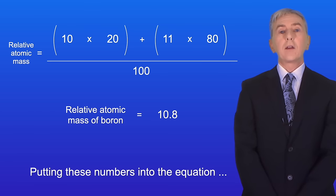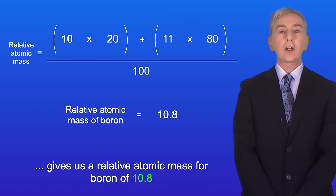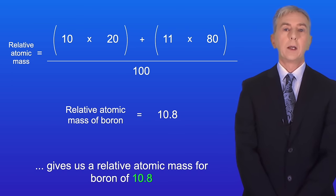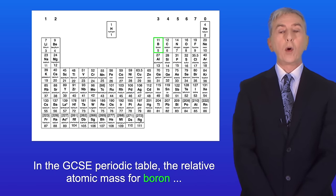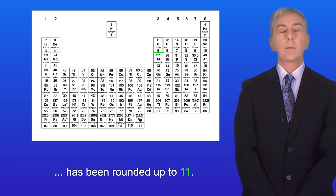Okay, putting these numbers into the equation gives us a relative atomic mass for boron of 10.8. Now in the GCSE periodic table the relative atomic mass for boron has been rounded up to 11, and we can see that here.